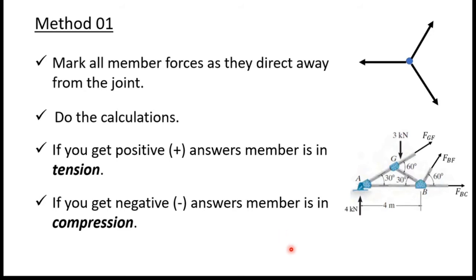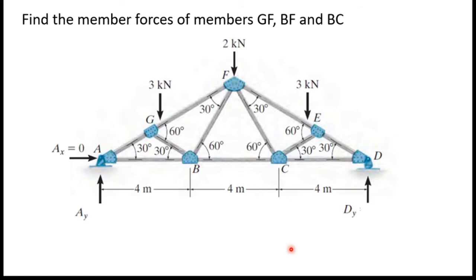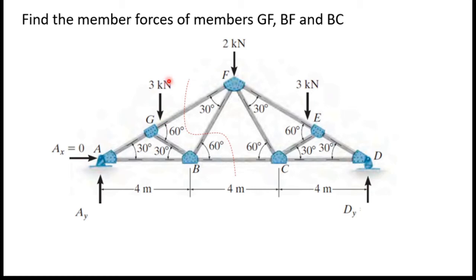Now we will solve this problem using method of sections — find the member forces of members GF, BF, and BC. GF is this member, BF is this member, and BC is this member. In order to find these member forces I have to draw a line through these three members, and I will cut this truss through this line, then consider this part alone.